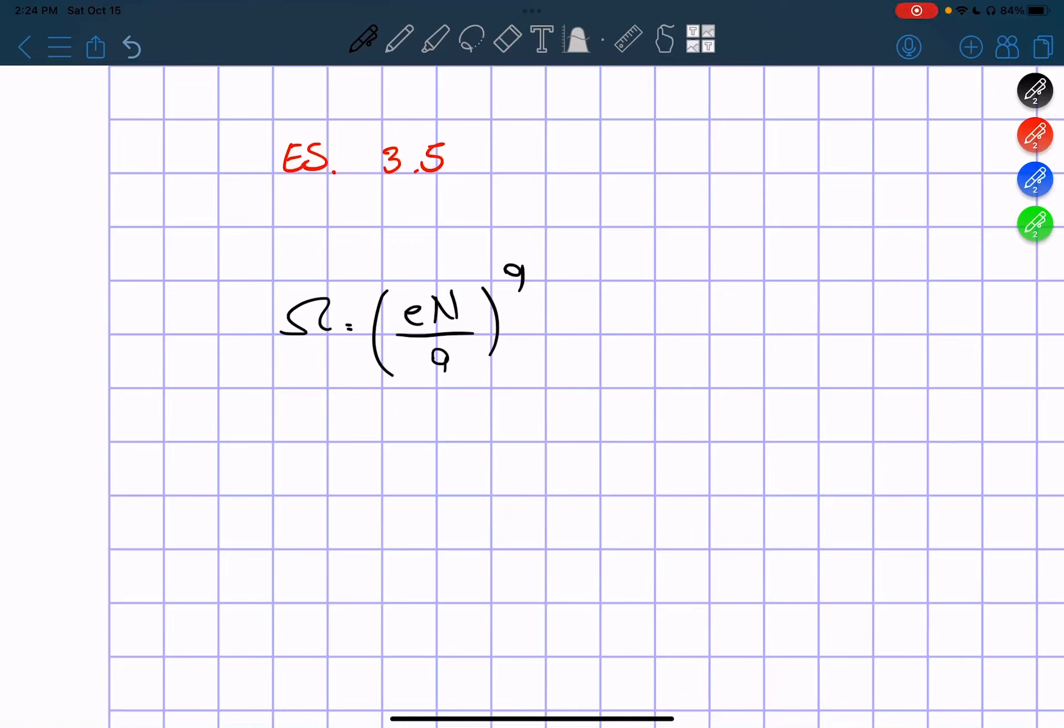Hello everybody, so here we are doing exercise 3.5. Starting from the result of Roman 2017, we found that the multiplicity is equal to this.